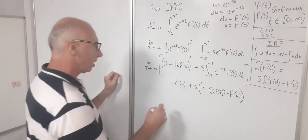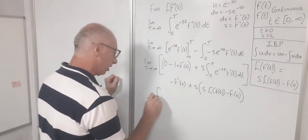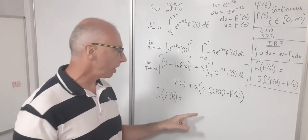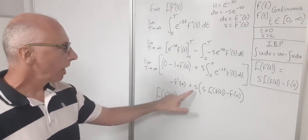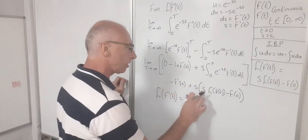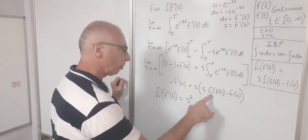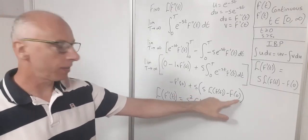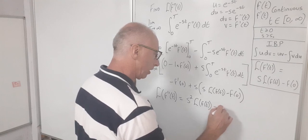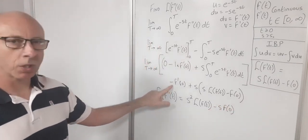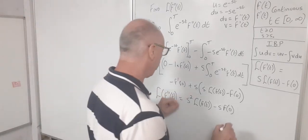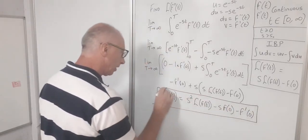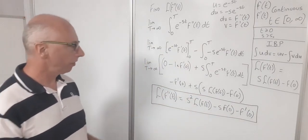Now let's simplify to get our final answer for the second derivative. The Laplace transform of f double prime of t equals s squared times the Laplace transform of f of t, minus s times f at zero, minus f prime at zero. That is our result for the Laplace transform of the second derivative.